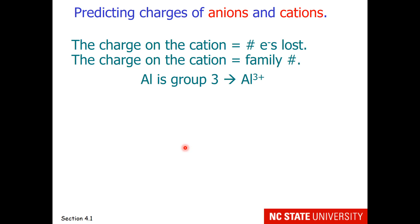How do you predict the charge of anions and cations? Cations are very simple. The charge on the cation equals the number of electrons lost. So the charge on the cation is equal to the family number. For example, aluminum is group 3.